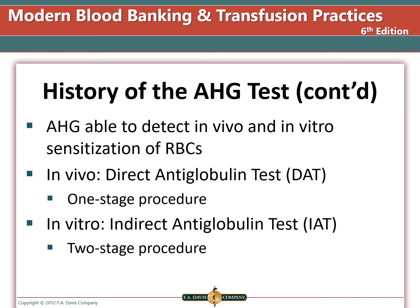If we add patient plasma to reagent red cells and the plasma has antibodies that will attach to those cells, we can then add the AHG and agglutination will occur. For cells that are already coated in vivo, this would be a one-step direct antiglobulin test. If we want to detect antibodies that are in the plasma, we need a two-stage procedure or an indirect antiglobulin test.